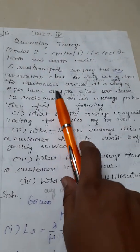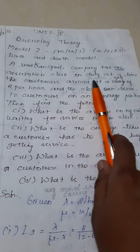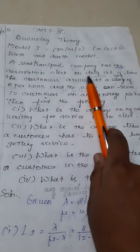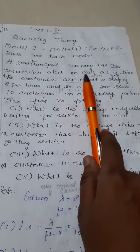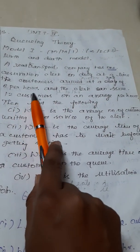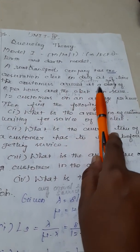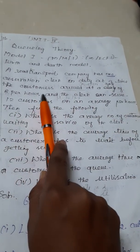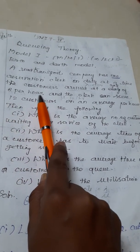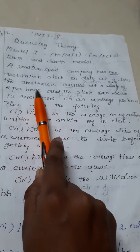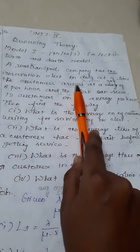Now how to find out the average arrival rate? Average arrival rate is nothing but number of customers arriving per unit of time. So they say customers arrive at a rate of 8 per hour. So number of customers 8 per unit of time, therefore we have 8 per hour. This is going to be the lambda value.